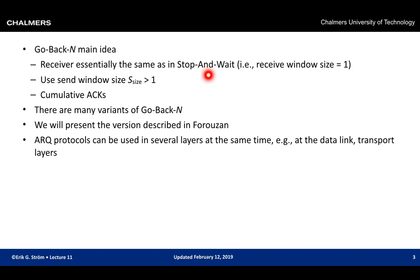In go-back-N, the receiver essentially acts as stop-and-wait, with a receive window size of one. We use a send window with size greater than one and cumulative ACKs. There are many variations of go-back-N — different textbooks describe it differently. We'll use the version in our textbook (Forouzan) to avoid confusion. Note that go-back-N in Forouzan is described as a transport layer protocol, but it's not constrained to the transport layer — it can also be in the data link layer.